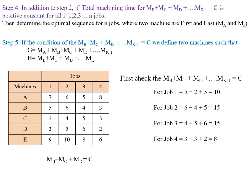For job 1: machining time for machine B, C, and D is 5 + 2 + 3 = 10. For job 2: 6 + 4 + 5 = 15. For job 3: 4 + 5 + 6 = 15. For job 4: 3 + 3 + 2 = 8. So M_B + M_C + M_D is not constant for all jobs.